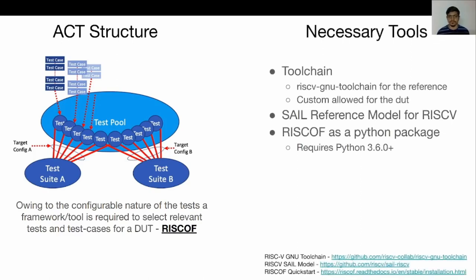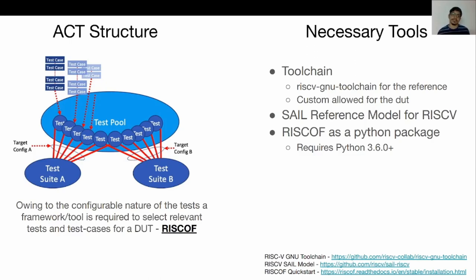Before we get into RISC-OFF, there are a few tools you will need to install. The first is the compiler toolchain — we recommend using the RISC-V GNU toolchain, but you're free to use your own custom SDK or toolchains. You'll also need to install the RISC-V SAIL model, which acts as the reference model against which compatibility has been proven. Finally, you'll need to install the RISC-OFF tool, which is a Python package requiring Python 3.6 and above.